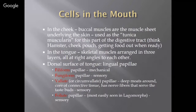In the cheek, there are buccal muscles — a muscle sheet underlying the skin. This is used as the tunica muscularis, or the muscular shirt — part of the digestive tract. Think about the hamster: they have a cheek pouch for getting food, and they can access that food whenever they're ready to eat. So there are buccal muscles under the skin.